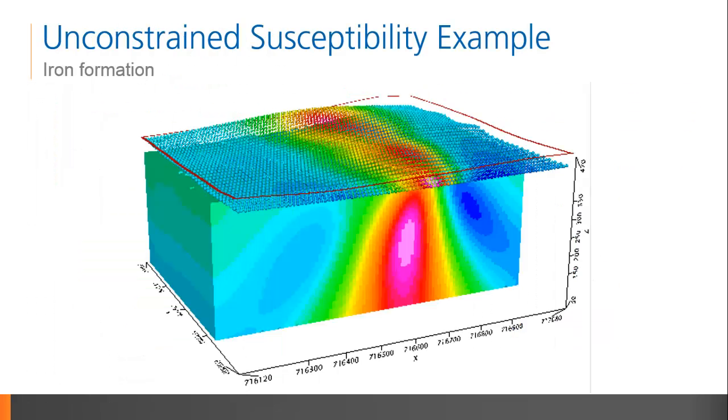In this final example, we'll combine the methods I've outlined to show you the impact well-defined constraints can have on your inversion. We'll look at an iron formation in southwestern Australia. The airborne magnetic data is shown here, along with the default, unconstrained susceptibility inversion. The overall trend of the iron formation has been recovered, but little about the dip or lateral extent can be deduced from the default smooth model.